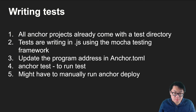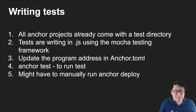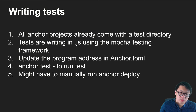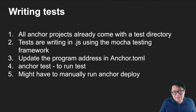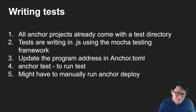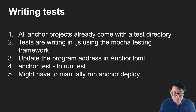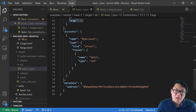All Anchor projects automatically come with a test directory. Tests are written in JavaScript using the Mocha testing framework — a nice way of writing verbose tests. Remember to update your anchor.toml file with the new program address, otherwise the test won't work. To run tests, just run anchor test. I found that we had to manually run anchor deploy to rebuild our Rust code if we made changes there, otherwise tests would be stale. If you only update the test file, anchor test will pick up those changes automatically.